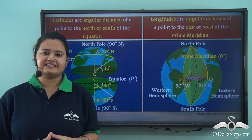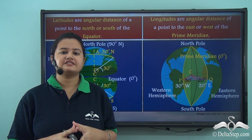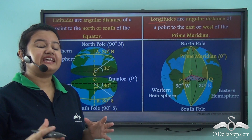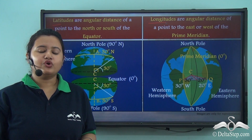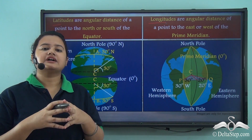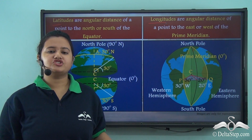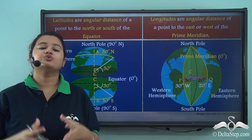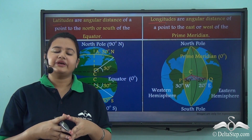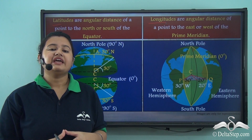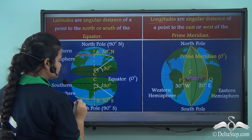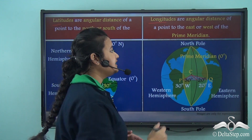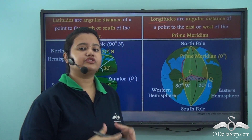In our previous lessons, we have already discussed about latitudes and longitudes separately in detail. In this video, we will try to make a comparison between these two imaginary lines. Basically, latitudes are imaginary horizontal lines on the surface of the globe, whereas longitudes are imaginary vertical lines on the surface of the globe.